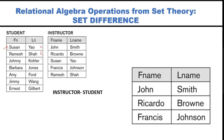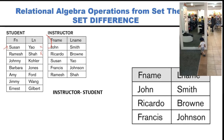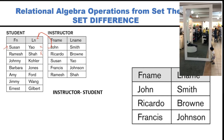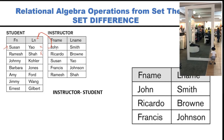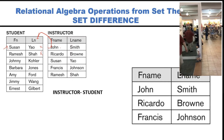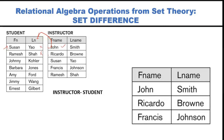A correction: for 'instructor minus student', you pick from instructor and search in student. John — not in student, so take John. Ricardo — not there, so take Ricardo. Susan — is there, so cannot take Susan. Francis — not there, so take Francis. Ramesh — is there, so cannot take Ramesh.